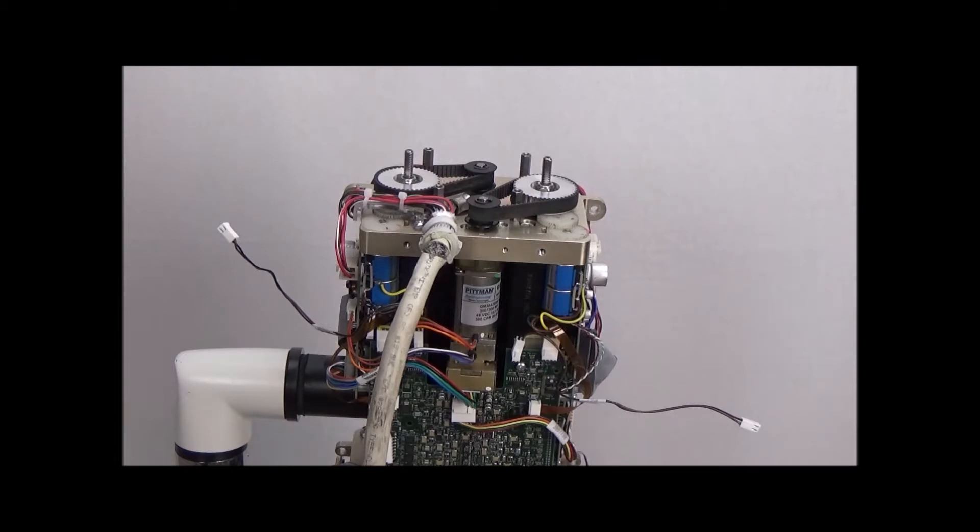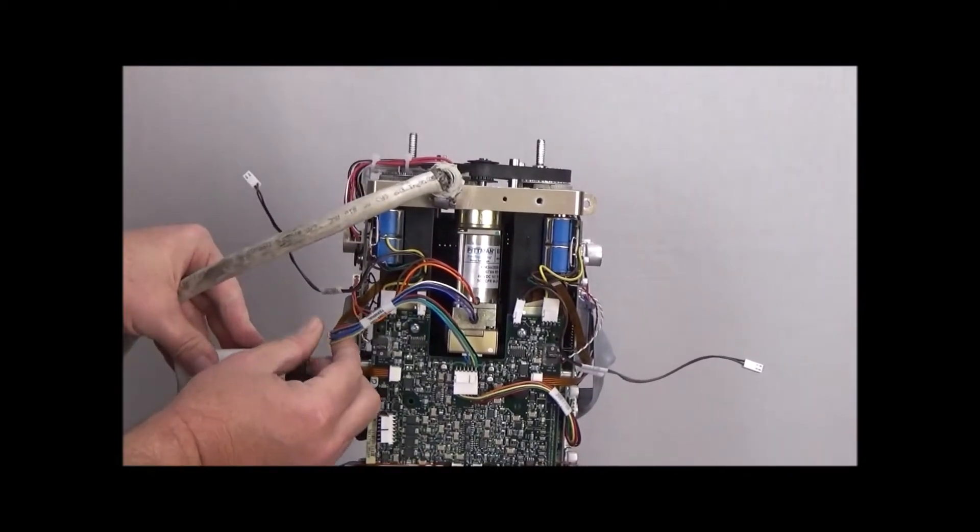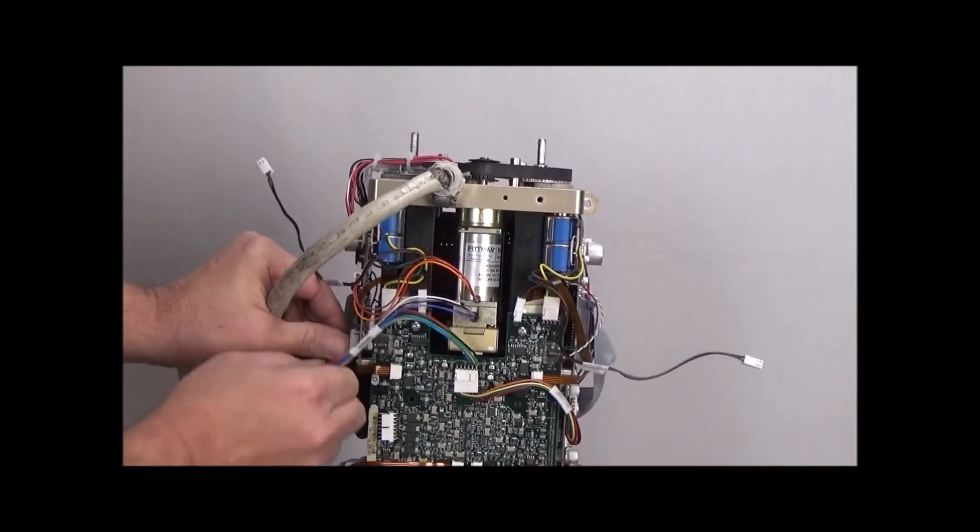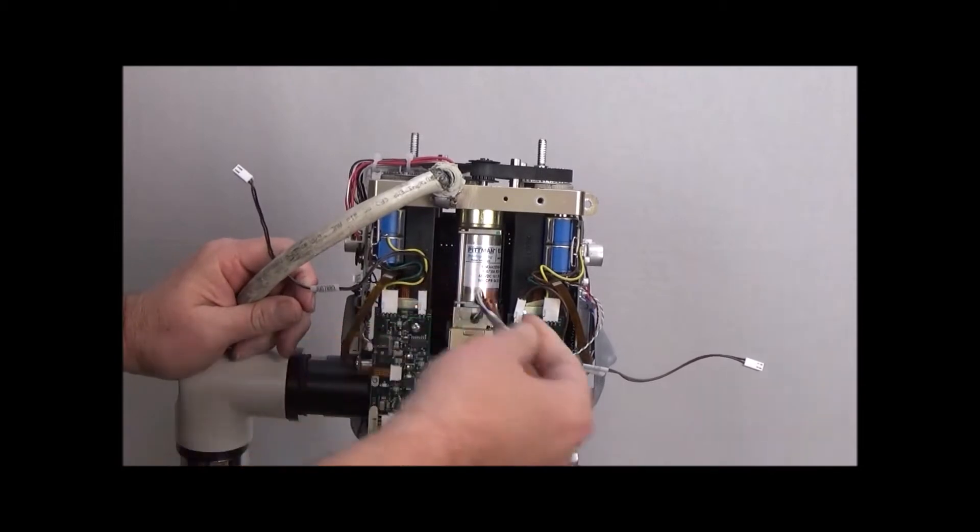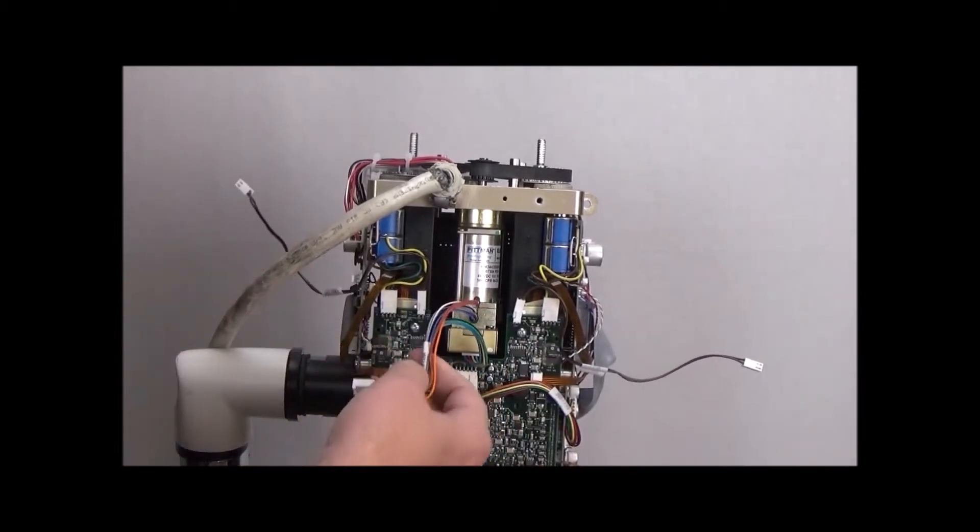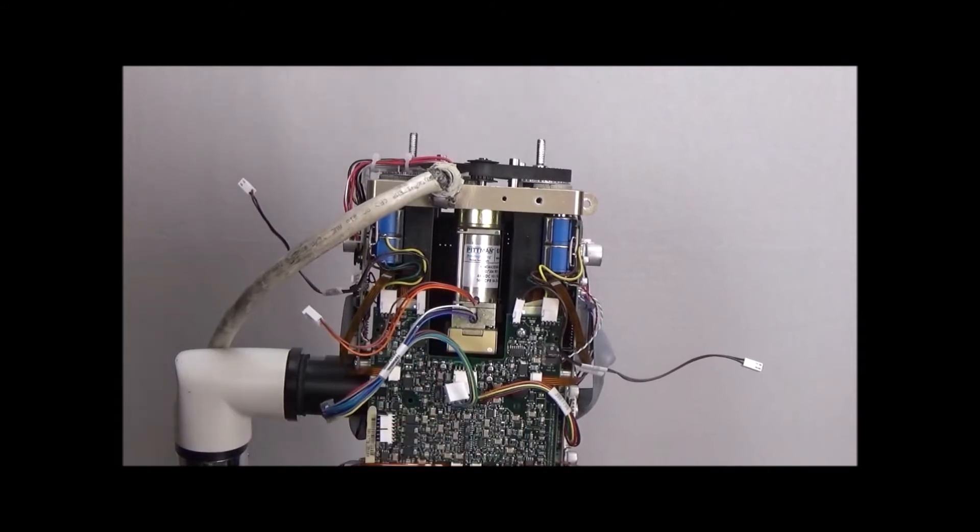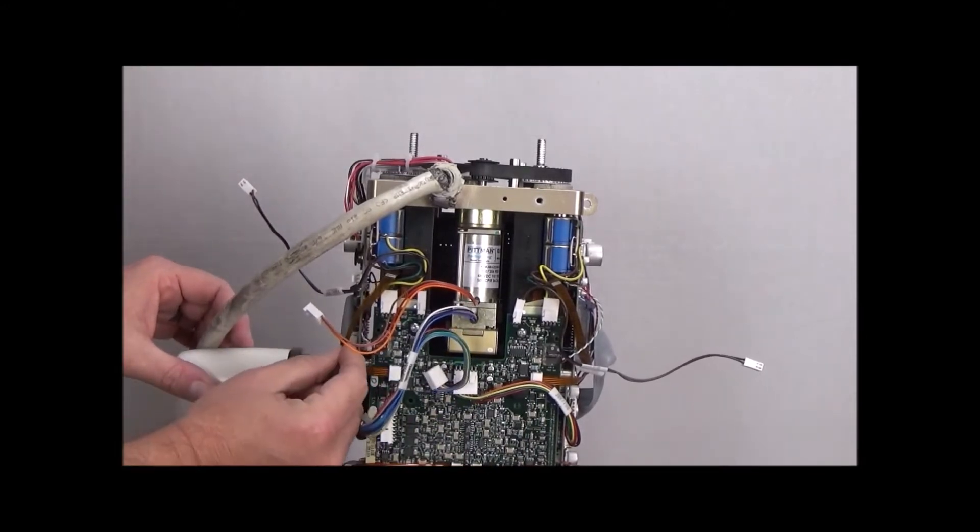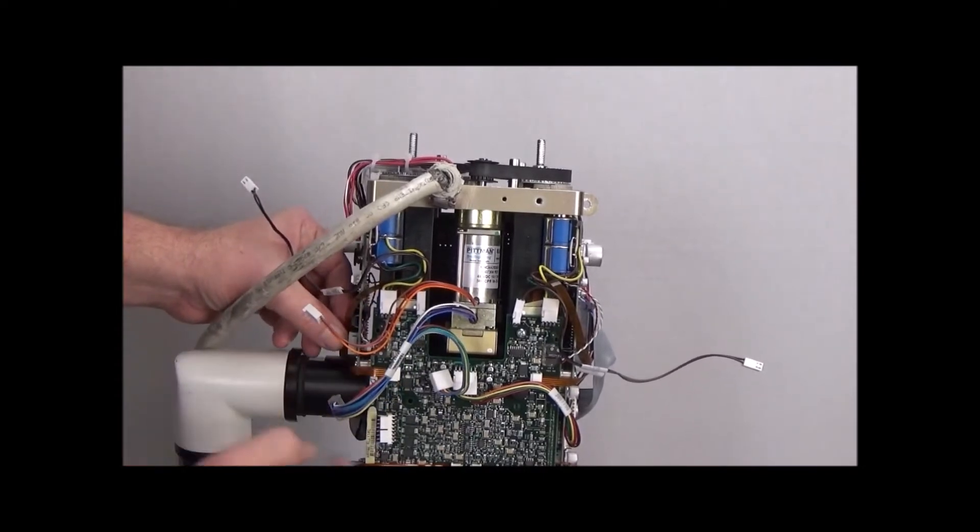First thing, we're going to disconnect a few connectors for the motor. And it actually makes life easier to pull that off as well. When we take this connector off, make sure we pull this orange ribbon cable behind it so we don't tear this ribbon cable when we're trying to take this one off.